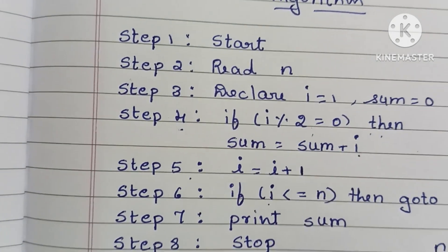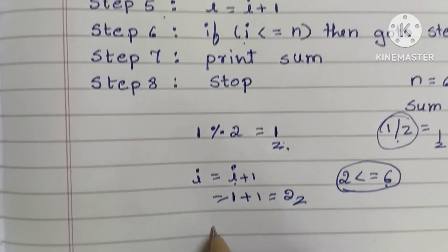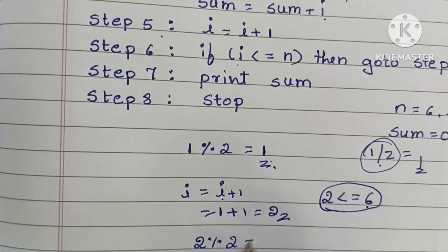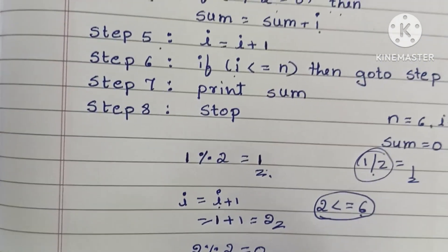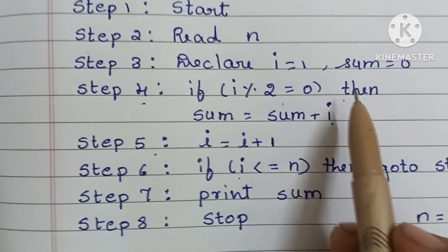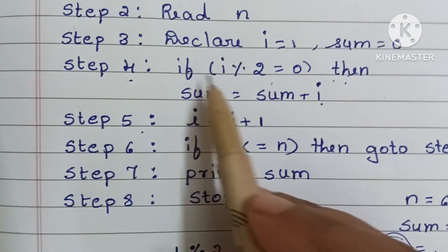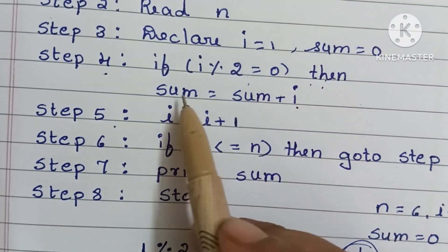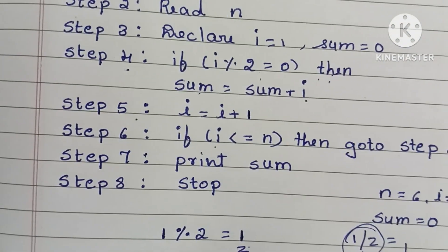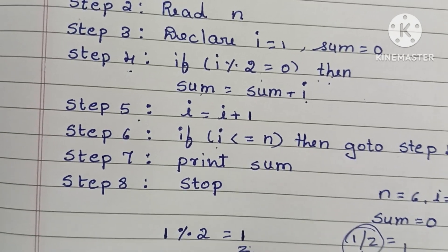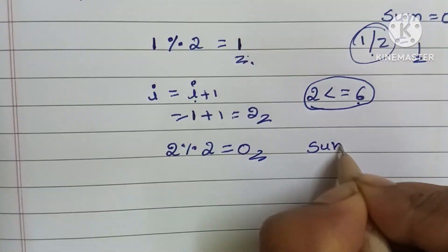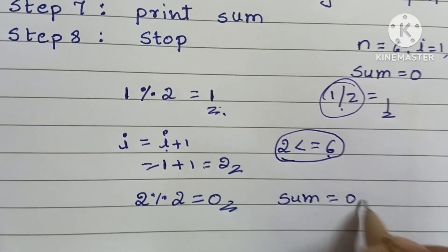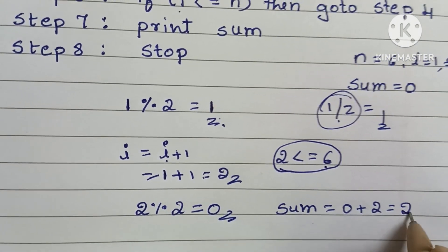In step 4 again, i is now 2. We check 2 modulo 2, which equals 0, so the condition is true. We execute sum equals sum plus i: sum is initially 0, so 0 plus 2 equals 2. Sum is now 2.